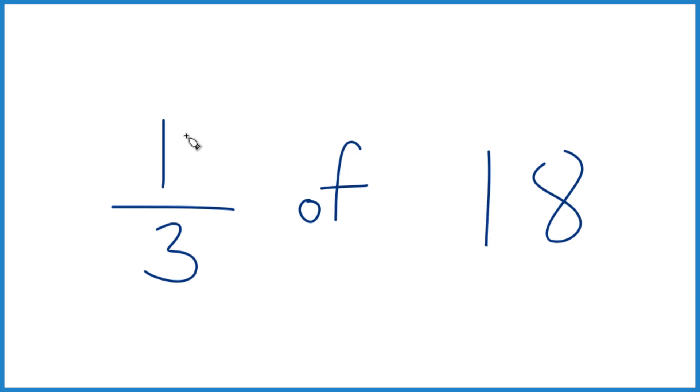So the first thing when you see one-third of, that 'of' we can replace with multiplication. So one-third times 18.